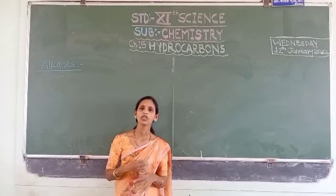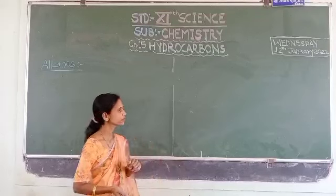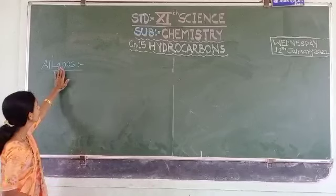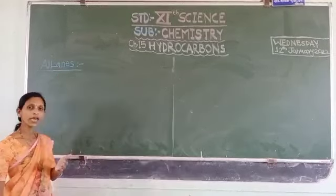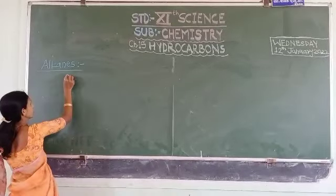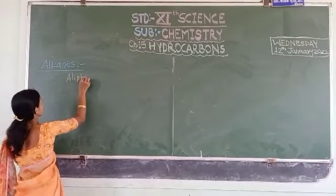But today I am going to remind the previous knowledge. First of all we will discuss on alkanes. What are alkanes? Alkanes are nothing but aliphatic hydrocarbons. Aliphatic means open chain hydrocarbons and open chain organic compounds — it may be straight chain or it may be branched.